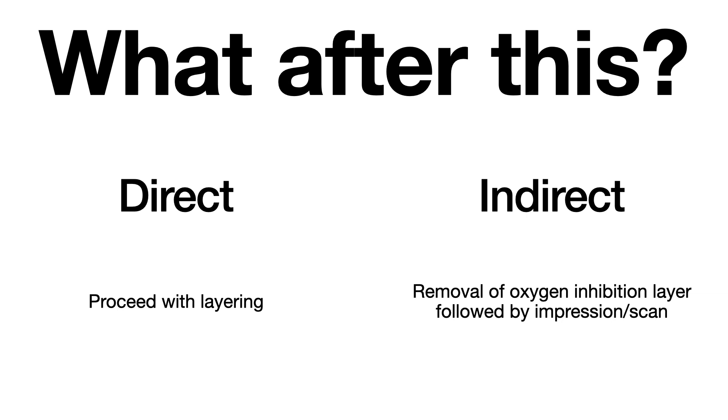For indirect restorations, the next step is removal of the oxygen inhibition layer, followed by impression taking and then scanning. The flowable composite and adhesive both contain monomers, so after light curing there will be some oxygen inhibition layer present. Before taking an impression or scanning, this must be removed — otherwise the impression material will stick to the oxygen inhibition layer. I already have an excellent video on this topic; the link is on top of your screen.